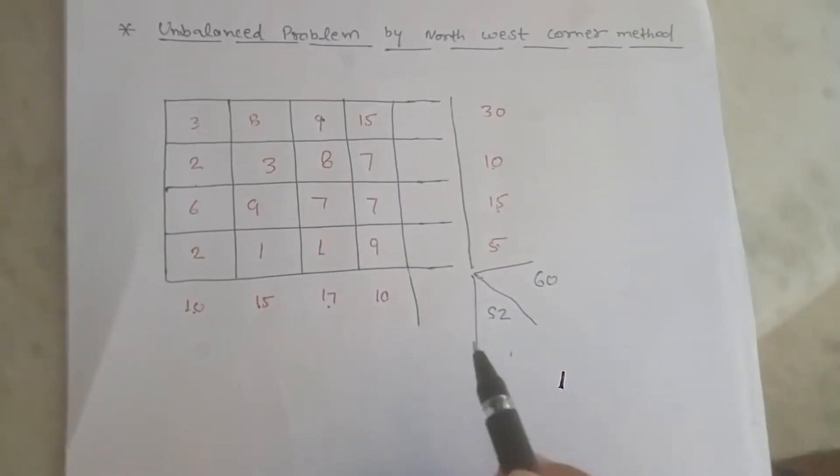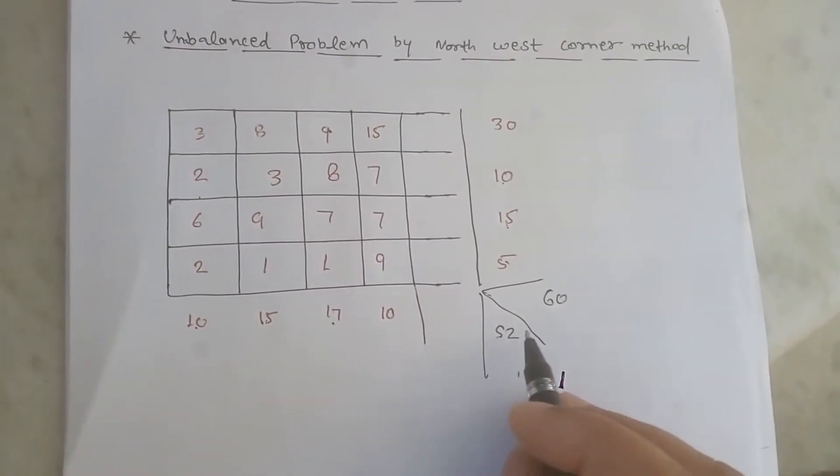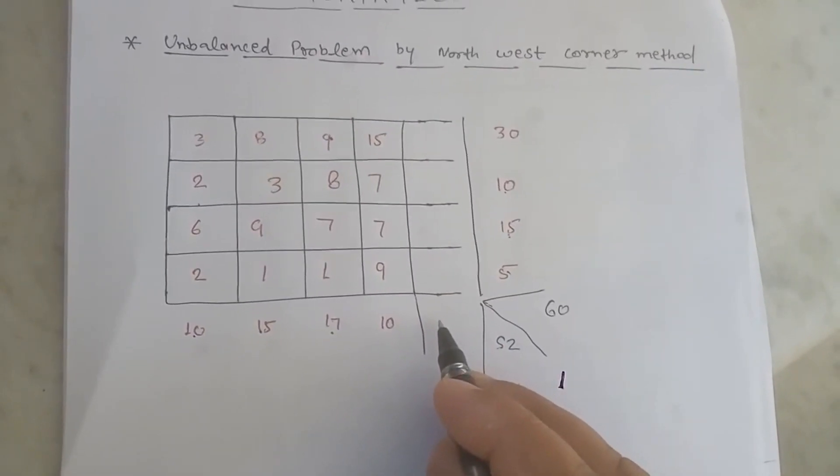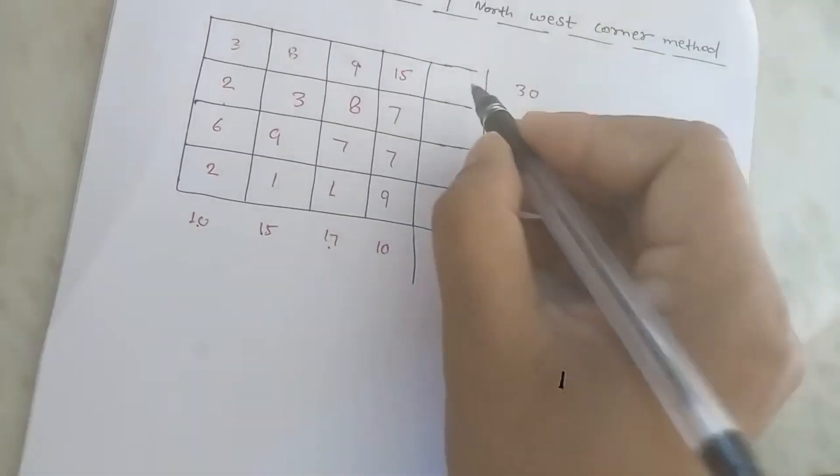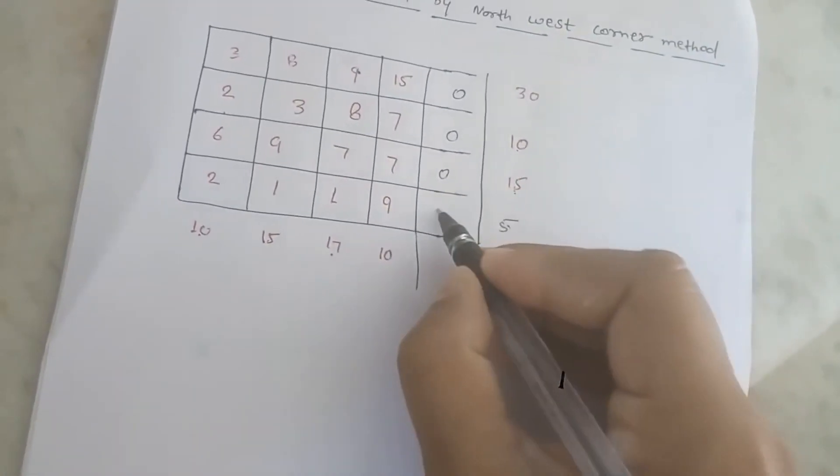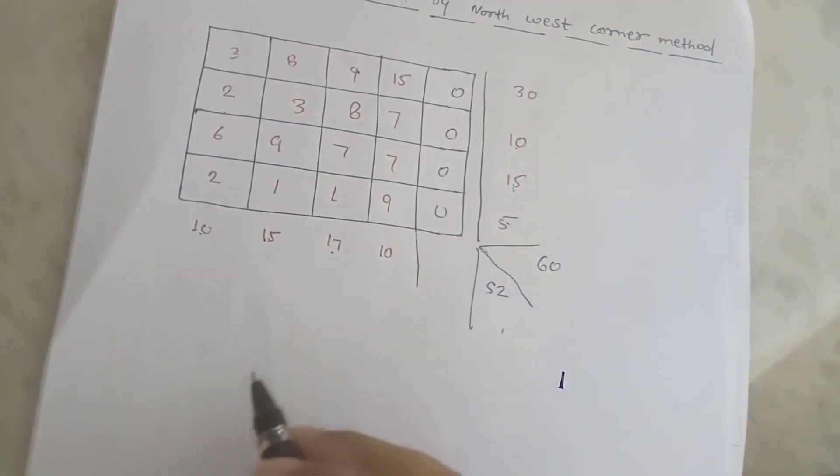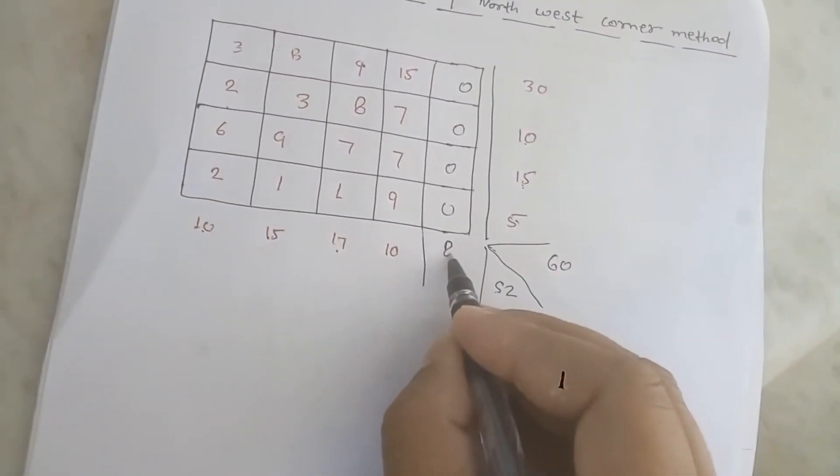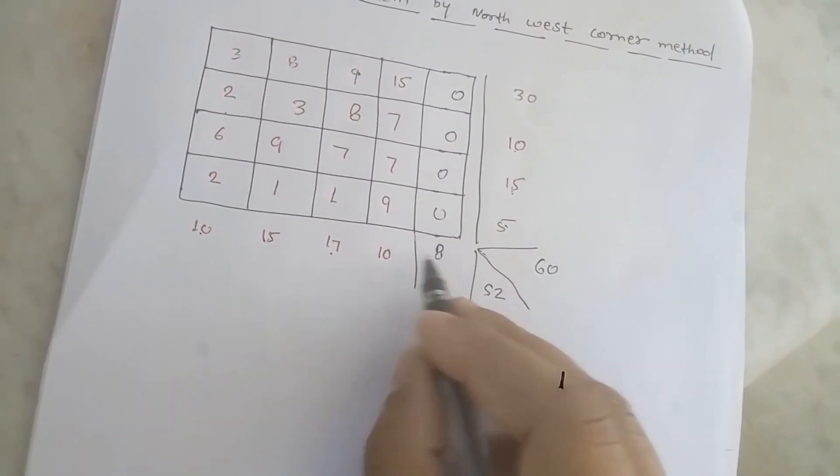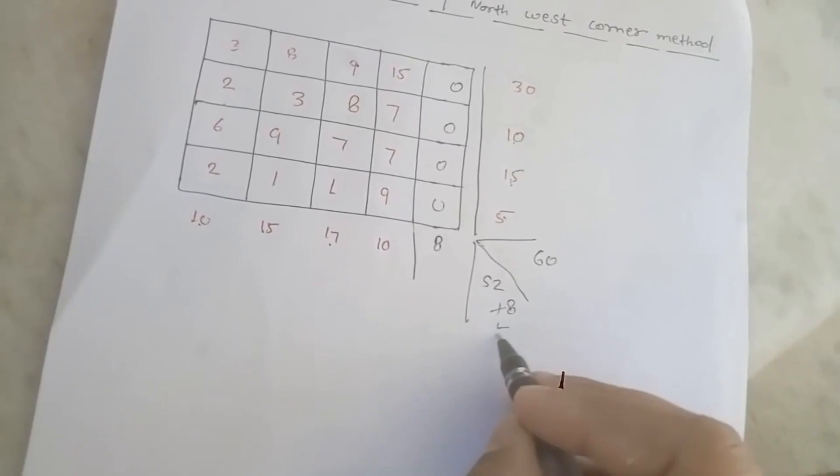So 8 is short, so we are going to introduce an 8 in the column. We are going to use some dummy numbers like zeros in the column, and introduce 8 in bj to balance the transportation problem. Now ai is equal to 60 and bj is also equal to 60.